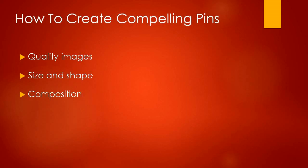Size and shape do matter. Pins look best when they are vertically oriented. I recommend an image aspect ratio of 2:3 or 1:3.5 and a minimum width of 600 pixels. Pins get cut off in feeds if the ratio is greater than 1:3.5, so make sure the image is not too tall. For example, an image that is 600 pixels wide should be between 900 pixels and 2100 pixels in height.